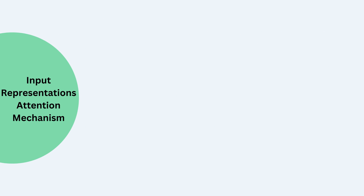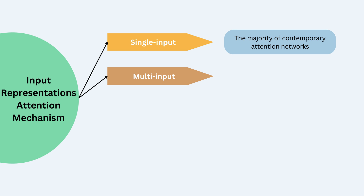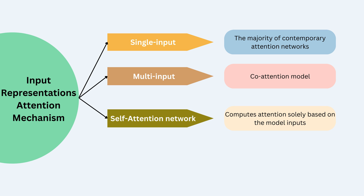Moving on to input representations, attention mechanisms fall into two primary categories: single-input and multi-input attention models. The majority of contemporary attention networks operate with single-input models, processing them as distinct sequences. In contrast, the co-attention model is an example of a multi-input attention network, concurrently applying the attention mechanism to two different sources and merging them in the final stages — proving advantageous for change detection in remote sensing images. The self-attention network computes attention solely based on the model inputs, reducing reliance on external information and enhancing performance in images with complex backgrounds.